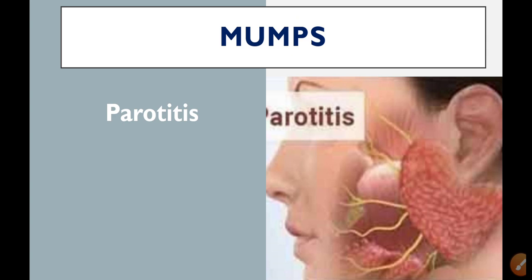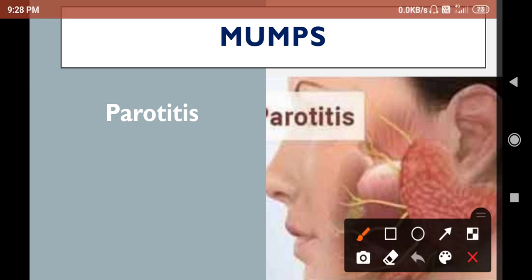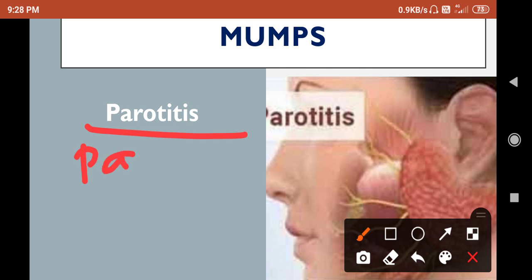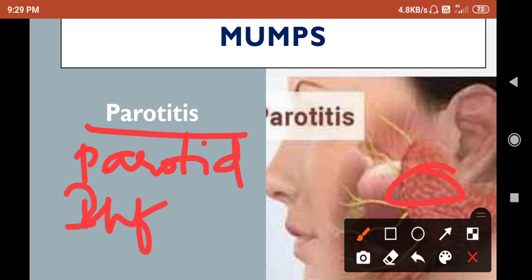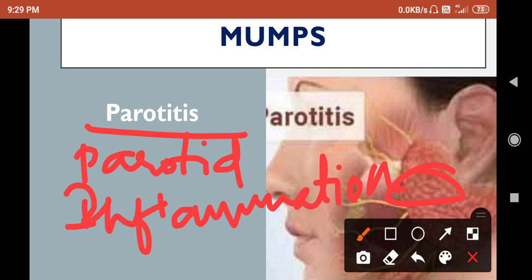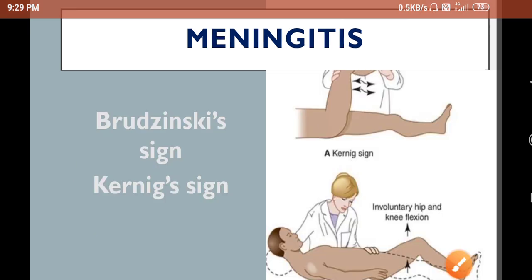Next: mumps. The primary symptom of mumps is parotitis. In an exam, if they ask in which condition parotitis is seen — among options like measles, mumps, or other mouth infections — you can say it is mumps. The parotid gland is visible here. Inflammation of the parotid gland is called parotitis. Remember: '-itis' means inflammation. Parotitis is seen in mumps.